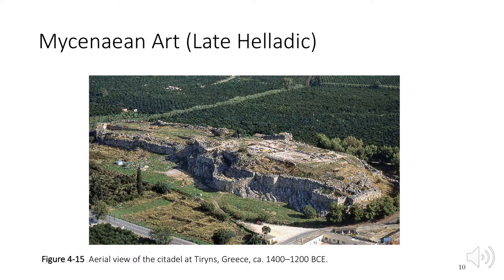In the late 1800s, a German archaeologist, Heinrich Schliemann, studied the cities from the Iliad and the Odyssey. He uncovered Mycenae on the Greek mainland, where he believed King Agamemnon — Menelaus' brother — once ruled. In this picture, we see the Citadel of Tiryns, located about 10 miles from Mycenae.